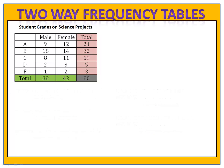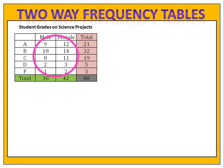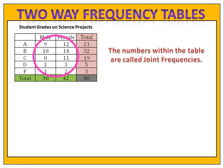Two terms you want to be familiar with are joint frequencies and marginal frequencies. Marginal frequencies are, as the name suggests, the numbers in the outer margins of the table — the total row and the total column. The numbers on the inside of the table are known as the joint frequencies.